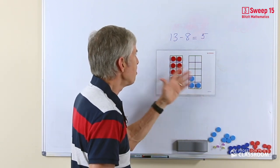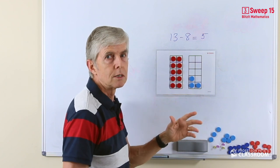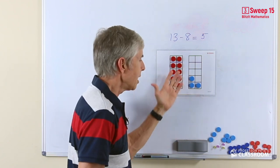If we're taking away 5, we take away those 3 plus another 2 because 3 plus 2 is 5, and that will leave 8 over here.